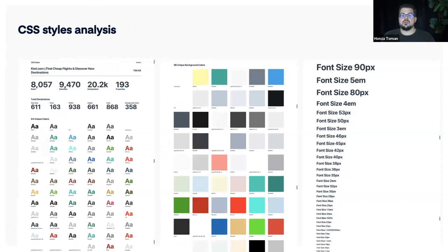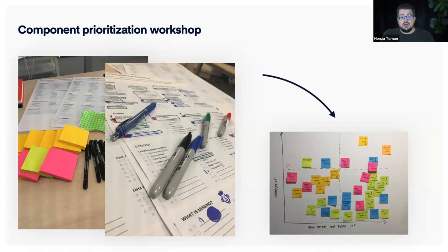We also did a CSS styles analysis, identifying all the different colors and font sizes across the codebase. After the component audit, we prepared a prioritization workshop — we printed a sheet inspired by Nathan Curtis and organized a workshop with developers and designers to pick the components for the design system.